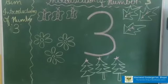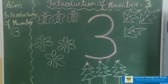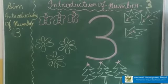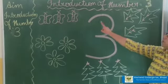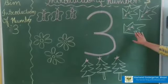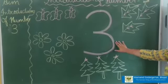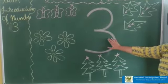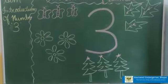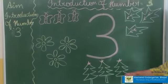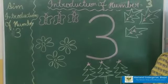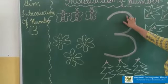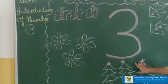Children, have you noticed something? All the objects are three in number. So which number is this? Yes, this is three. Which number? Three!